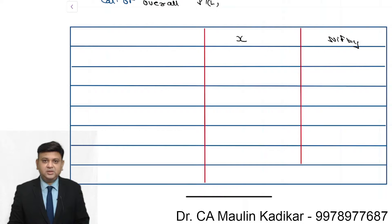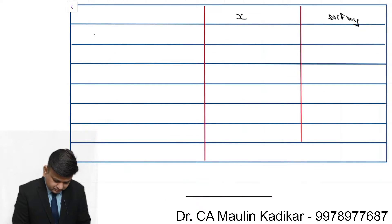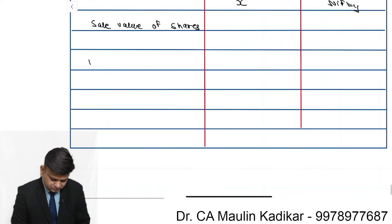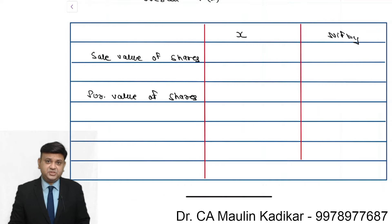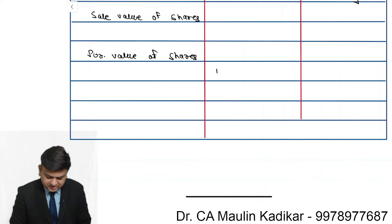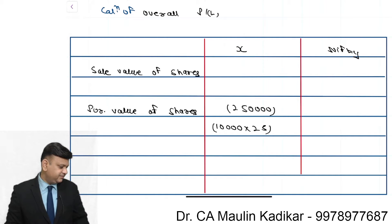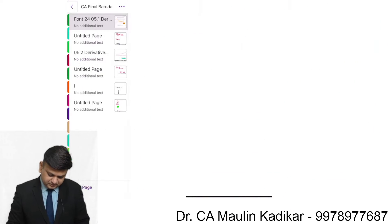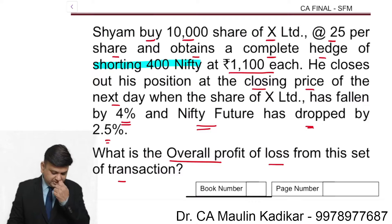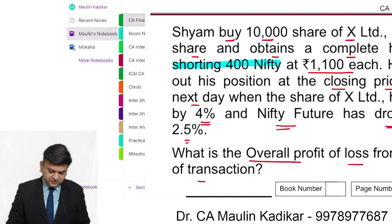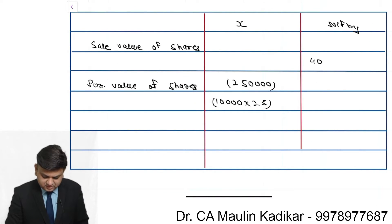Mr. Shyam purchases 10,000 shares of X Limited at the rate of rupees 25. So the purchase value of the shares is 10,000 × 25 = rupees 2,50,000. He also shorts 400 Nifties at the rate of 1,100 each. So Nifty was already sold: 400 × 1,100 = rupees 4,40,000.